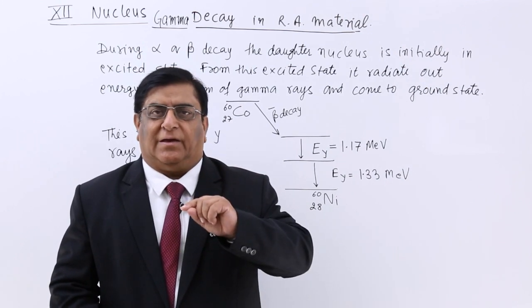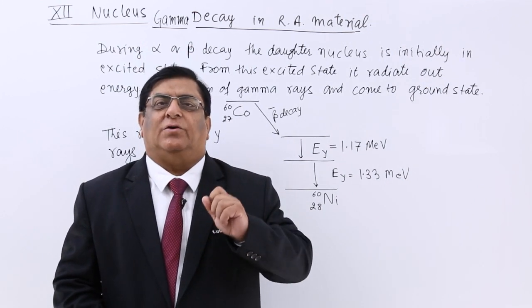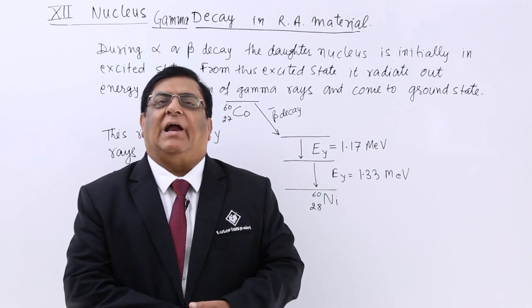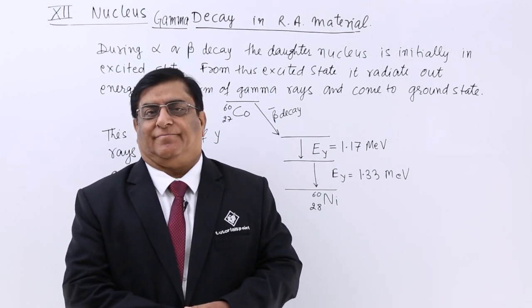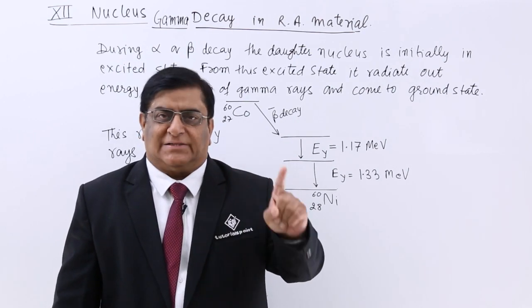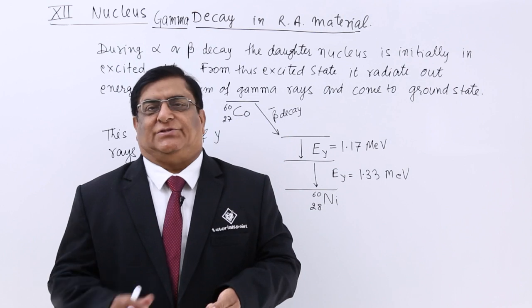In the second type of decay it is an electron or a positron which is ejected out from the nucleus and we call it beta decay. What are the changes? We have seen in their mass numbers and in their charge numbers.